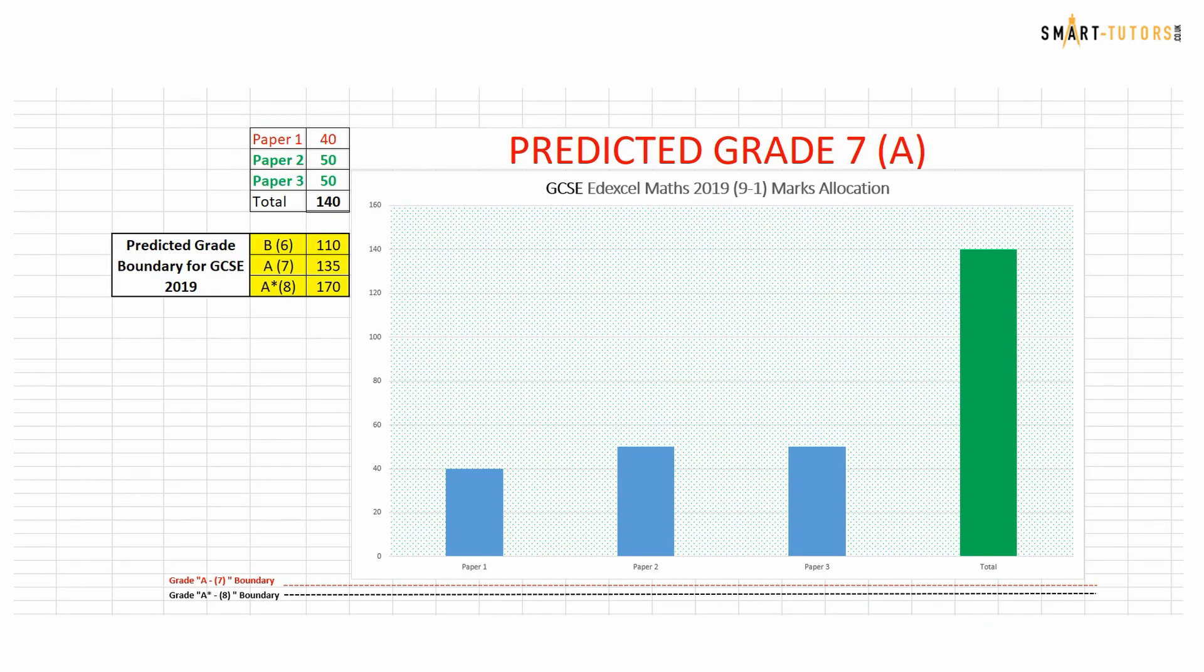Before we start these questions, let's look at this chart of our predicted grade boundaries for the maths GCSE. For the B grade level 6, 110 marks. For A grade level 7, 135. For A star level 8, 170.